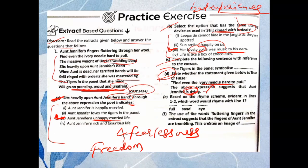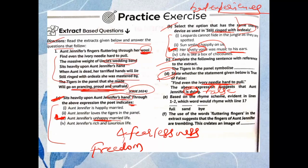Part E: Based on the rhyme scheme evident in lines one and two, which word would rhyme with line one? Line one is: 'Aunt Jennifer's fingers fluttering through her wool.' The word that rhymes with 'wool' is 'full,' so option (e), 'full,' is correct.